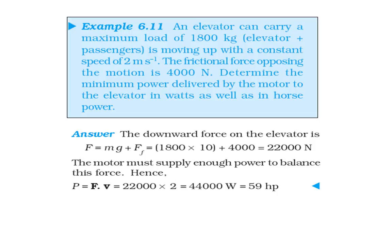Numerical problem from your NCERT, Example 6.11: An elevator can carry a maximum load of 1800 kg and is moving up with a constant speed of 2 m/s. The frictional force is 4000 N. Determine the minimum power delivered by the motor to the elevator in watts as well as in horsepower.